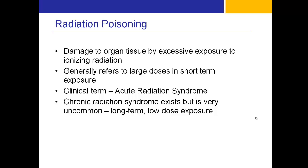A little bit about radiation poisoning: it refers to damage to organ tissue from excessive exposure to ionizing radiation, primarily gamma radiation. It generally refers to large doses in short-term exposure, called acute radiation syndrome. Chronic exposure can exist but is uncommon, representing long-term low-dose effects that can happen to nuclear workers, but the average citizen won't see much of it.